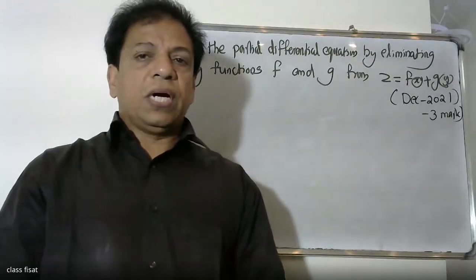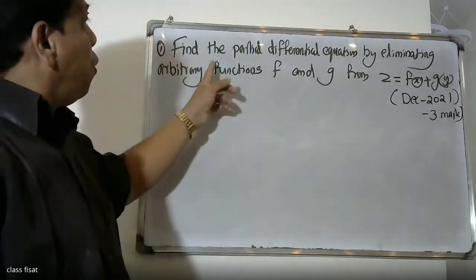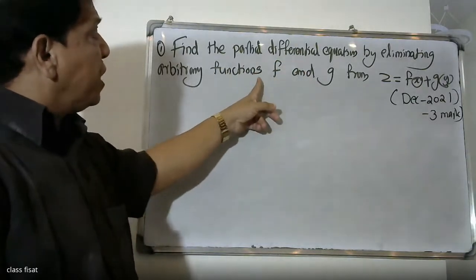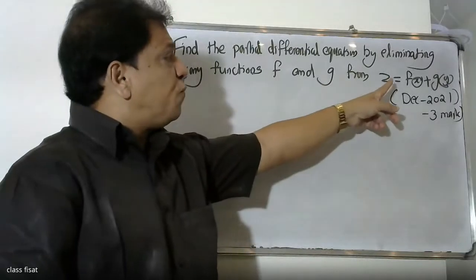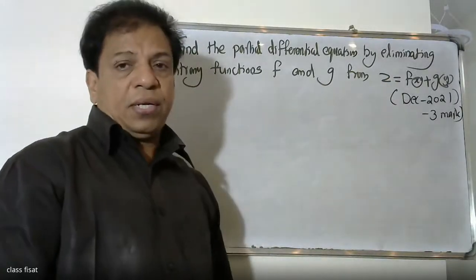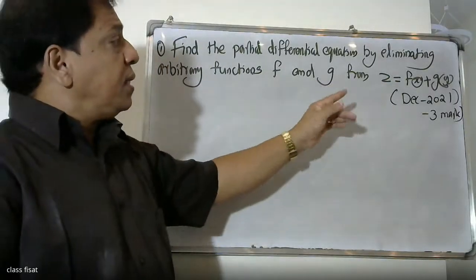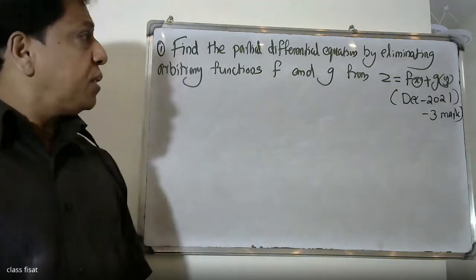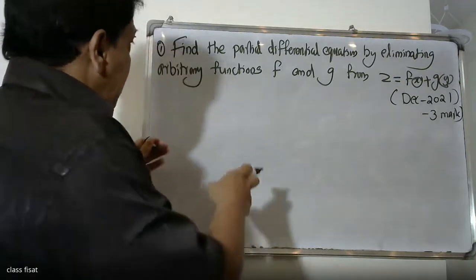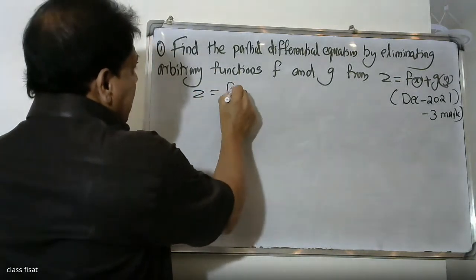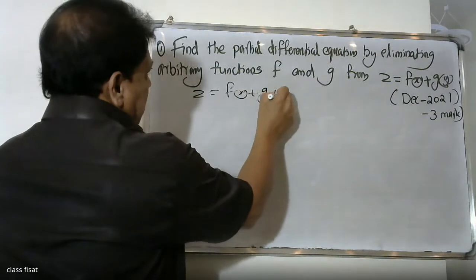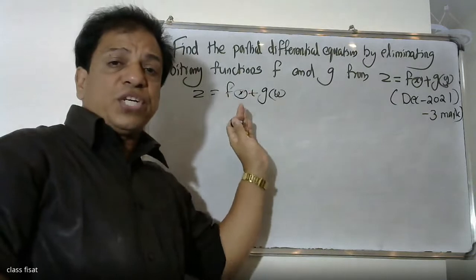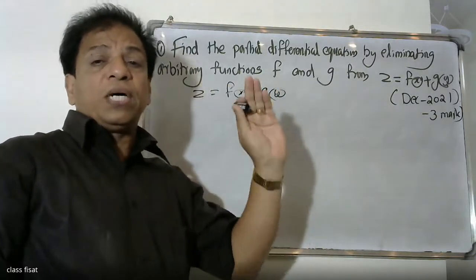Good morning students. The question is: find the partial differential equation by eliminating the arbitrary functions f and g from Z equals f of x plus g of y. In this case, f and g are two arbitrary functions, and we need to find a partial differential equation.